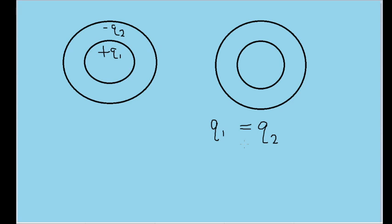First, let's deal with the simplest situation, where the charge magnitudes are equal. Conventionally, electric field lines are drawn in such a way that they originate at positive charges and terminate at negative charges. So we'll need to draw some electric field lines pointing from the inner shell to the outer shell.